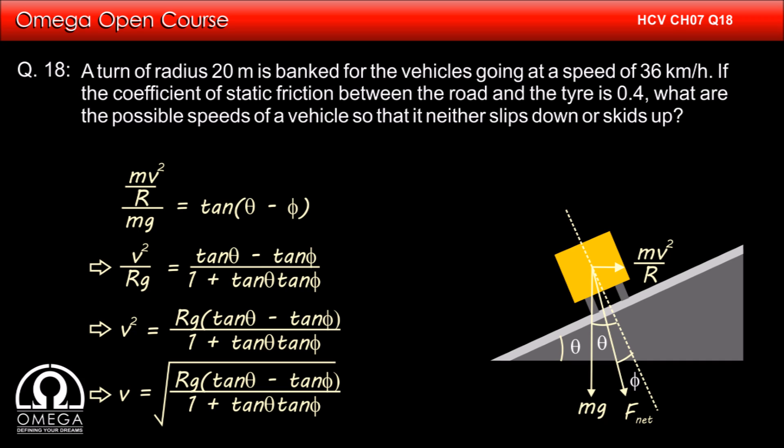Which implies v is equal to root under rg into tan theta minus tan phi divided by 1 plus tan theta into tan phi. Since the road is banked for 36 km per hour or 10 m per second, tan theta must be equal to V0 square by RG where V0 is equal to 10 m per second.